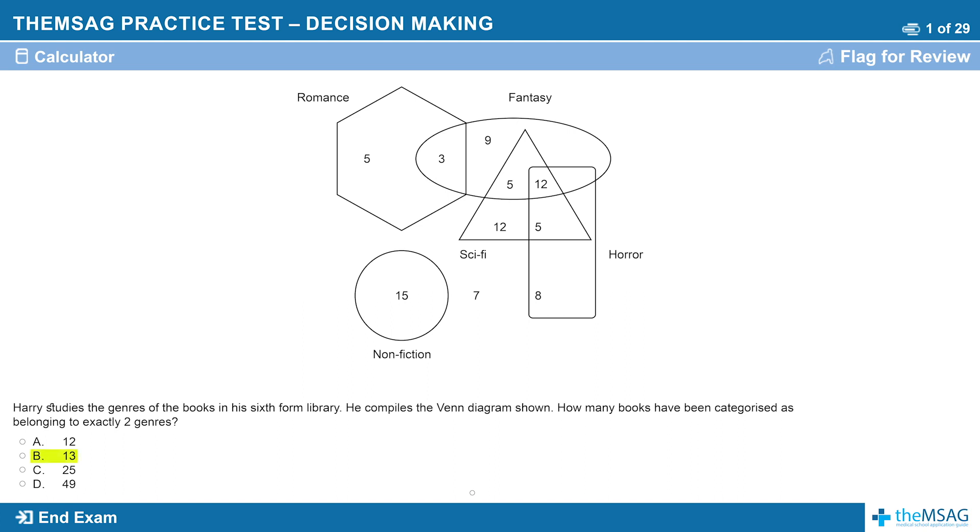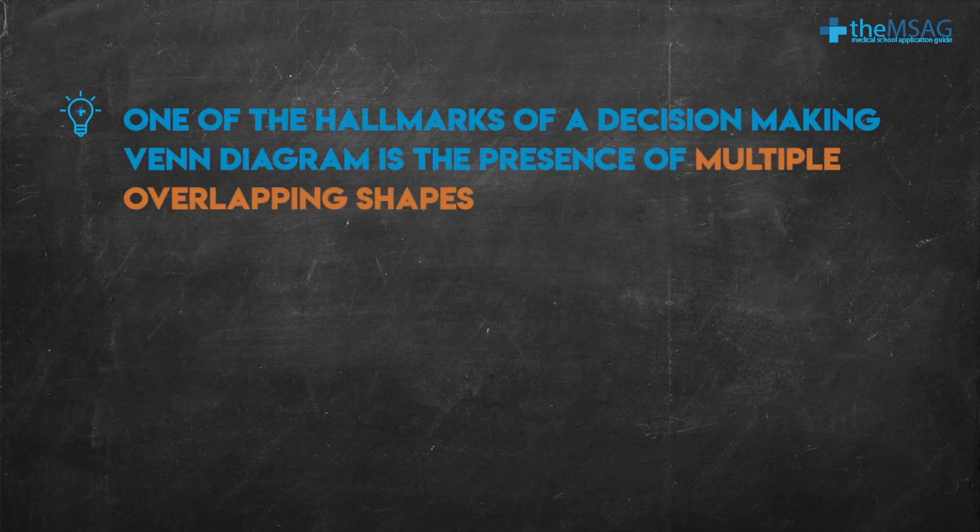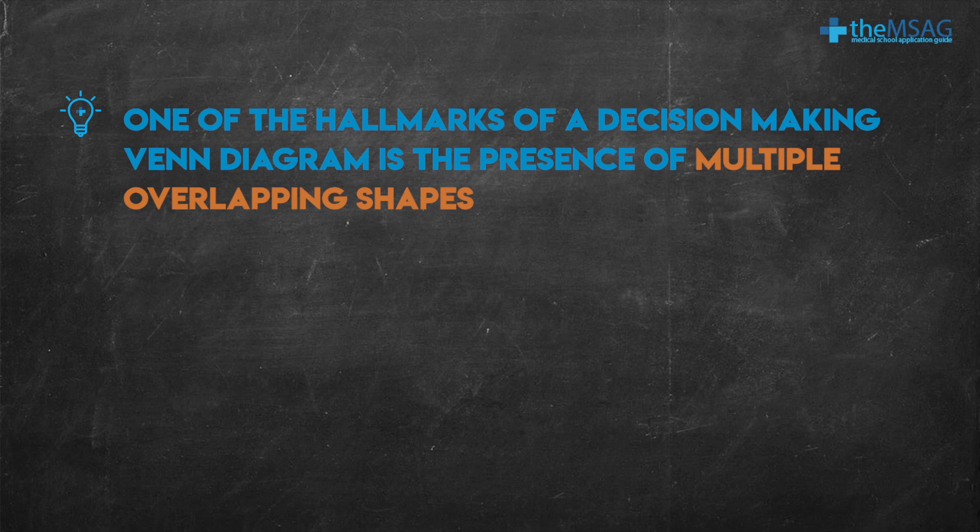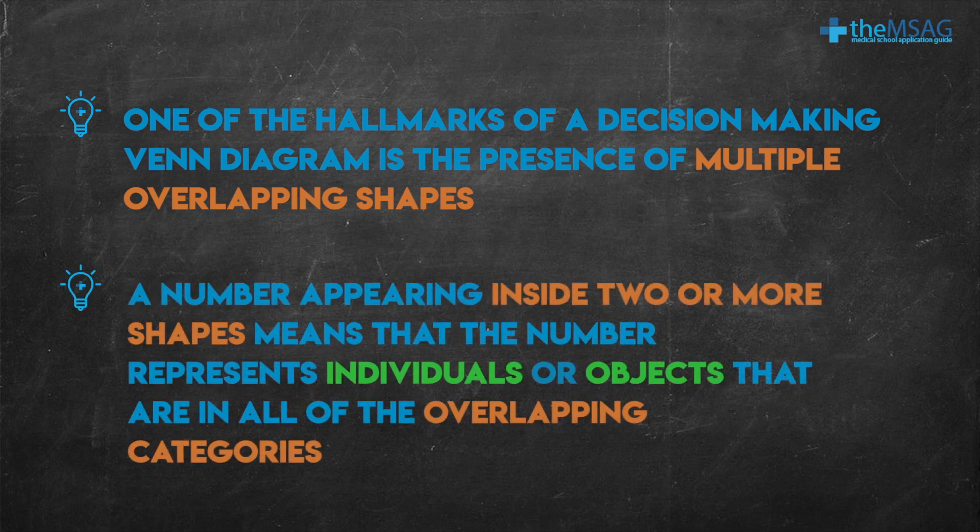Did you get 13? That is the correct answer. One of the hallmarks of a decision-making Venn diagram is the presence of multiple overlapping shapes. As you probably know, a number appearing inside two or more shapes means that the number represents individuals or objects that are in all of the overlapping categories.